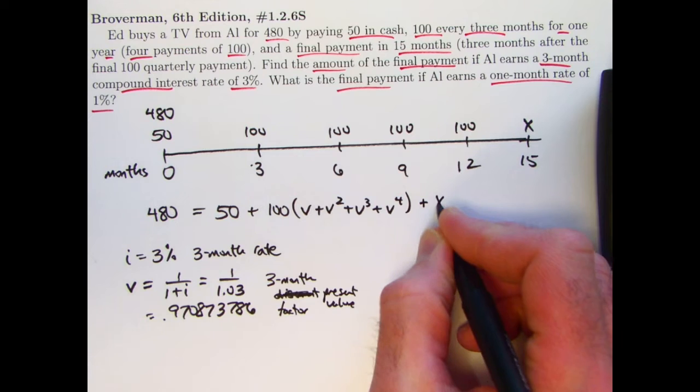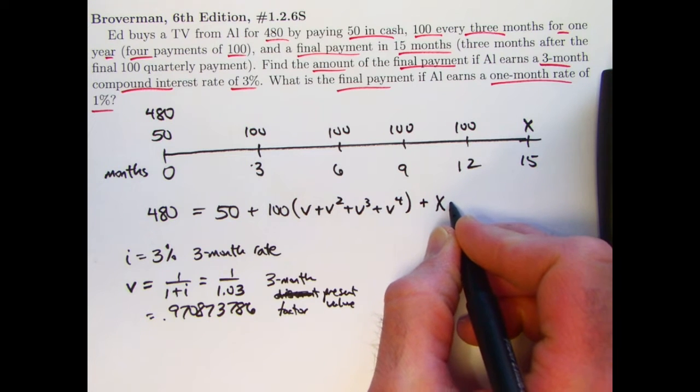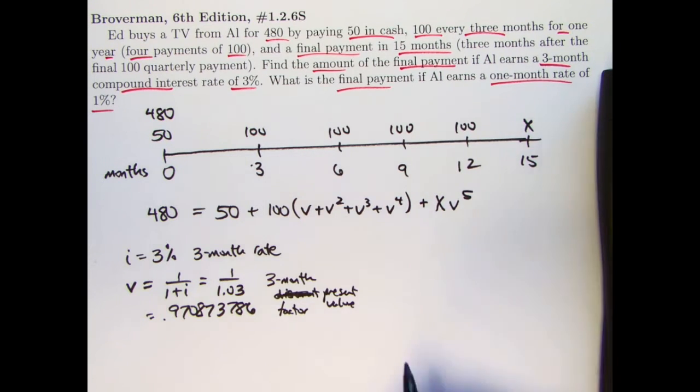And then I have this unknown payment, 15 months in the future, which would be five three-month periods. So I multiply X by V to the fifth. And this is the equation you need to solve for X.